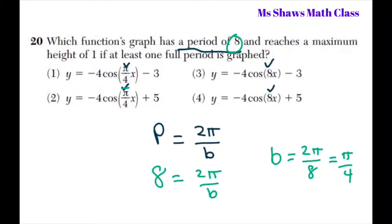So, that means our answer here is π over 4, so these two won't work. Now, it reaches a maximum height of 1 if at least one full period is graphed. So, I'm going to look at number 1 first, and it's a cosine.